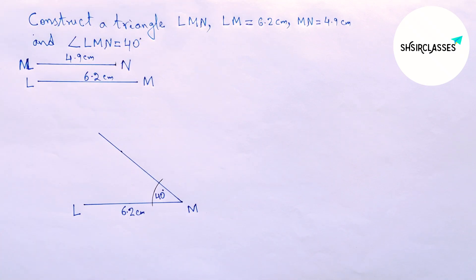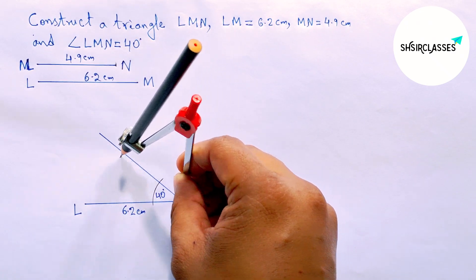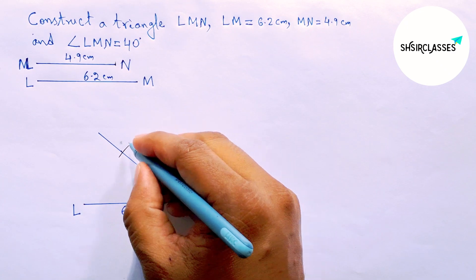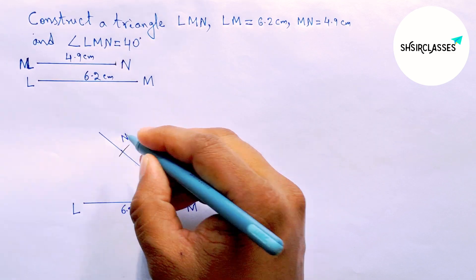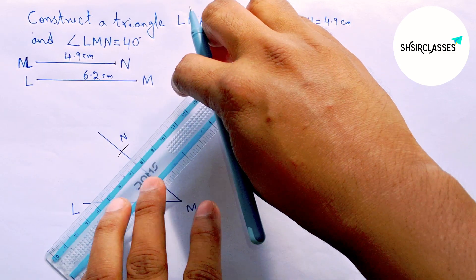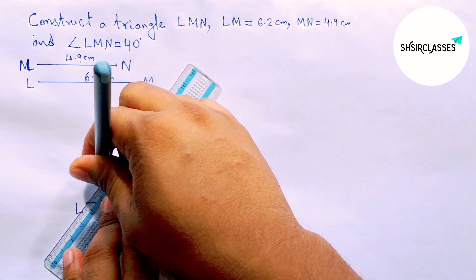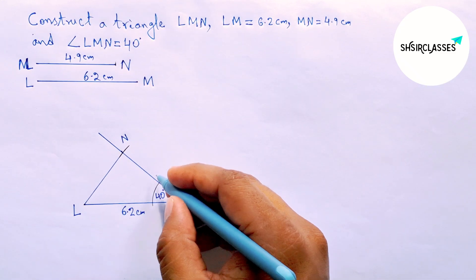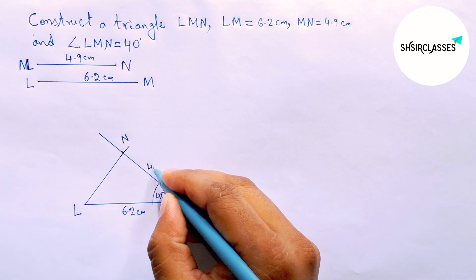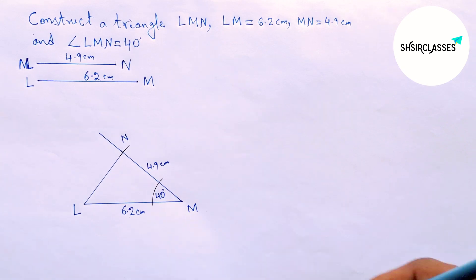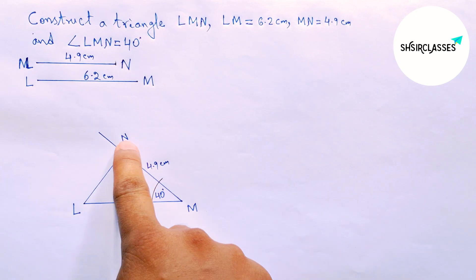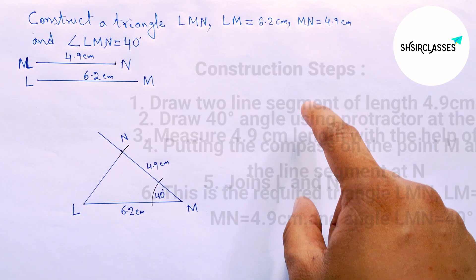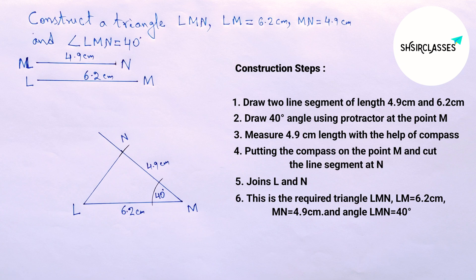Joining L and N. Here MN equals 4.9 centimeters. This is the required triangle LMN, and I will provide all the construction steps. That's all.